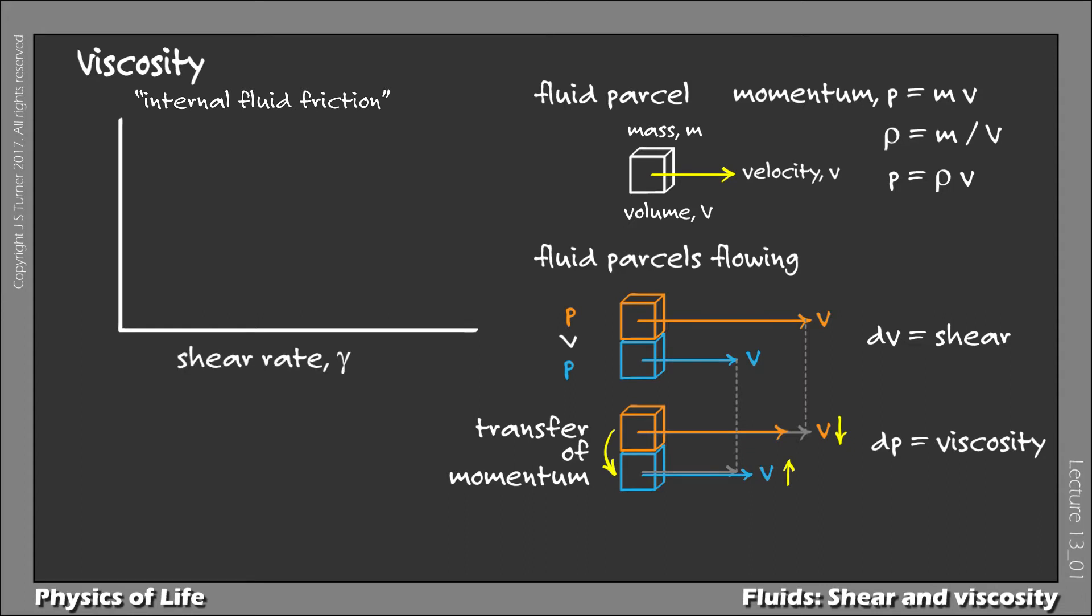But we can better define it quantitatively by relating two quantities to one another. On the x-axis is the shear rate, gamma, which is simply the differential of internal velocity within a fluid. This has units of inverse seconds. On the y-axis is the shear stress, tau, which is the momentum that is transferred through shear motion within the fluid.